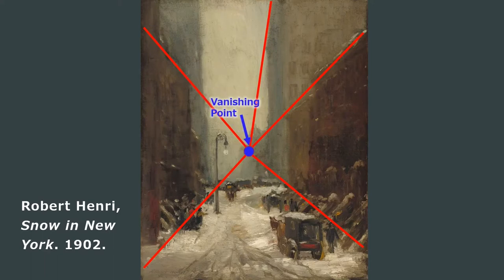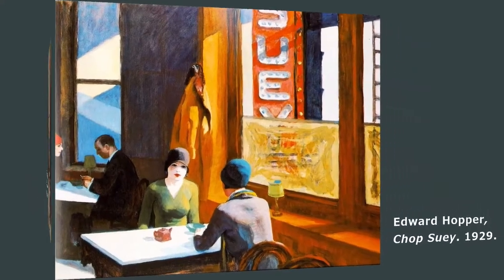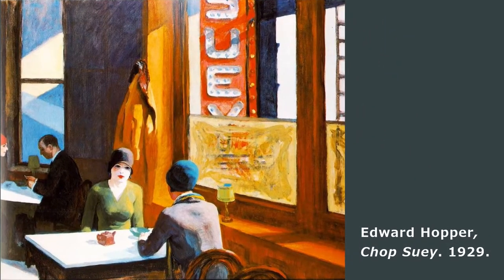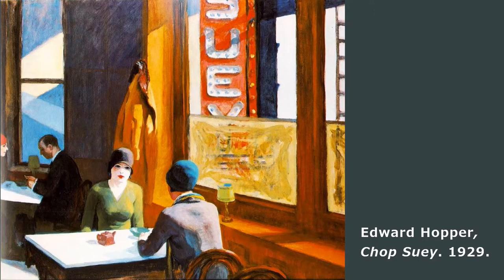And finally, this is a painting by Edward Hopper called Chop Suey from 1929. This is a view inside the building. So it's a smaller space, but the concept is still the same.